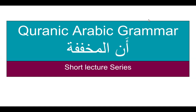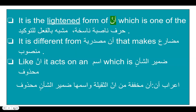Today we are going to learn about An al-Mukhaffafah in our short series. What is An al-Mukhaffafah? It is the lightened form of Anna, which is one of the sisters of Huruf-e-Nasibah: Inna, Anna, Ka-anna, Layta, La'alla, Lakinna. When it is made light by taking away one noon from Anna, it becomes An, and it is then called An al-Mukhaffafah.